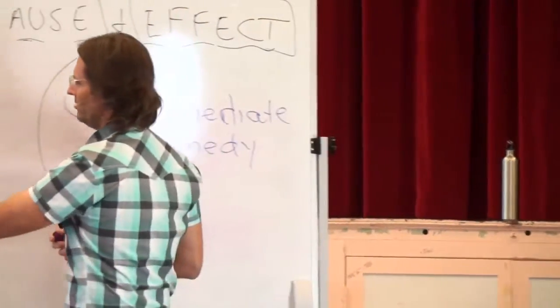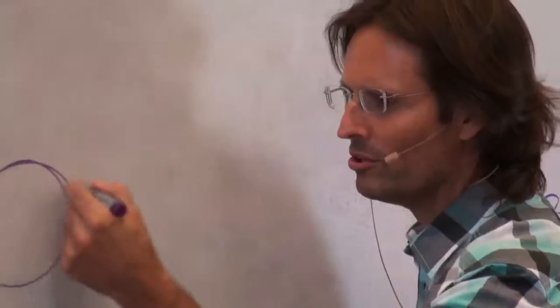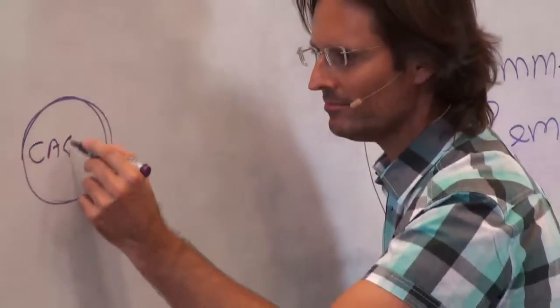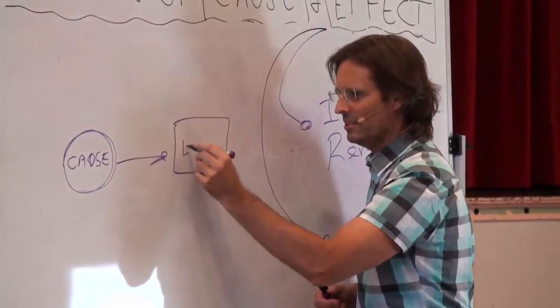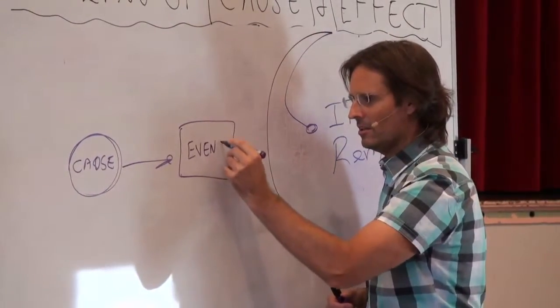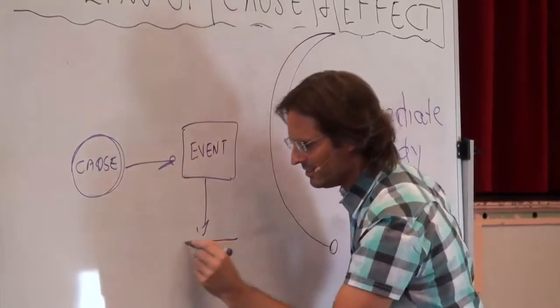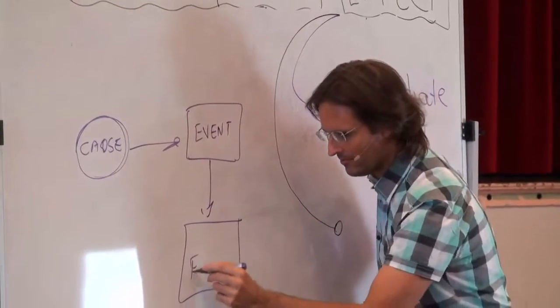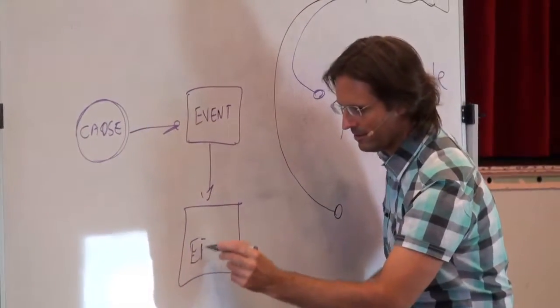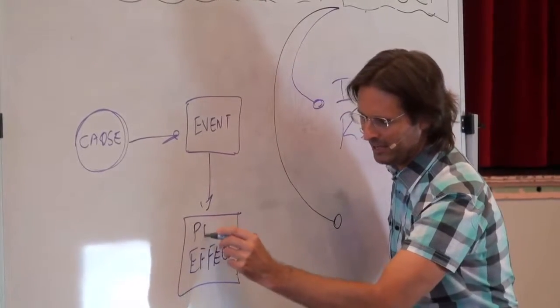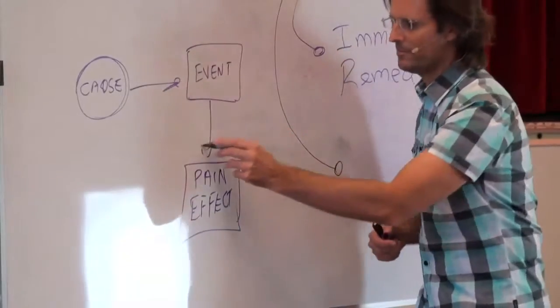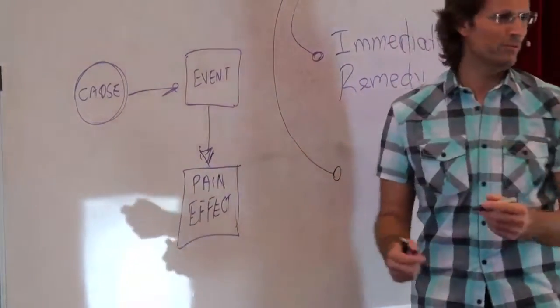So what we finish up doing is here's a cause. So you could draw the cause that big. That cause causes an event to occur which has its effect on us emotionally. And let's say it's a pain-based effect at this point, right? Because these are the ones we avoid, the pain ones.